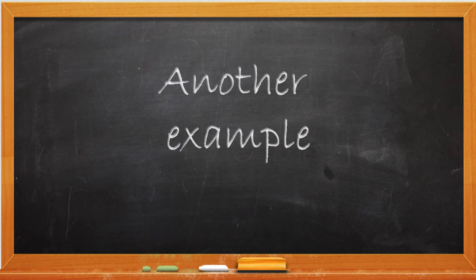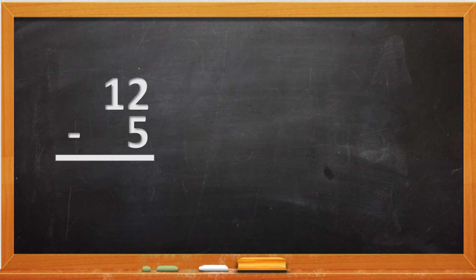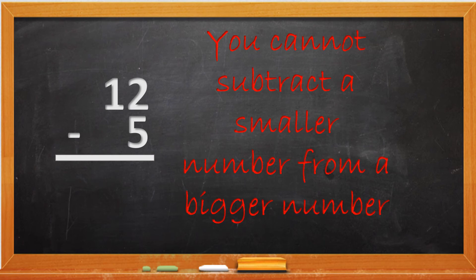I know this is a bit confusing, but let's do another example. So here we have 12 minus 5. Once again, you cannot subtract a smaller number from a bigger number. 2 is smaller than a 5.